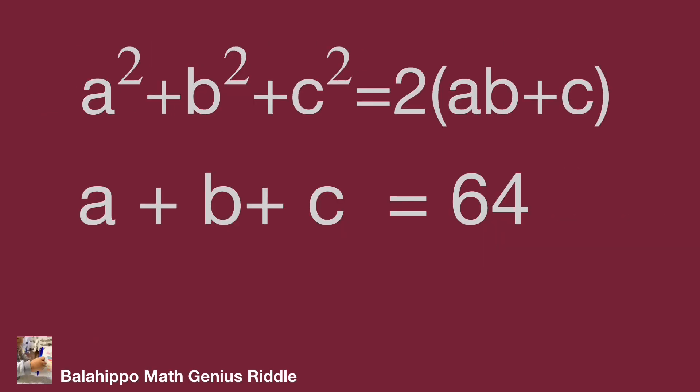The given equations a² + b² + c² = 2(ab + c) and a + b + c = 64. How to find the value of a, b, c from them? I am going to develop from the first equation: a² + b² + c² = 2(ab + c).